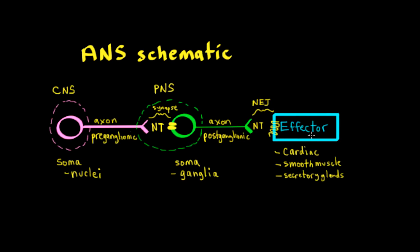And when we're dealing with the autonomic nervous system, the effector organs that we are considering are cardiac cells of the electrical system and the myocytes, smooth muscle cells, and secretory glands. These are the major effector organs of the autonomic nervous system.